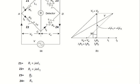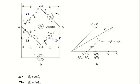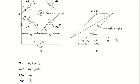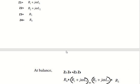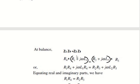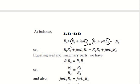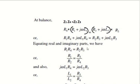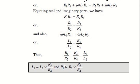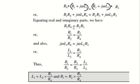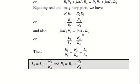The impedances are: Z1 = R1 + jωL1, Z2 = R2 + jωL2, Z3 = R3, Z4 = R4. Applying the balance condition Z1·Z4 = Z2·Z3: (R1 + jωL1)·R4 = (R2 + jωL2)·R3, which gives R1·R4 + jωL1·R4 = R2·R3 + jωL2·R3. Equating the real parts: R1·R4 = R2·R3, so R1 = R2·R3 / R4. The unknown resistance is obtained by equating the real part.